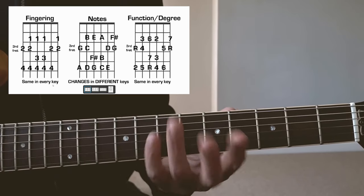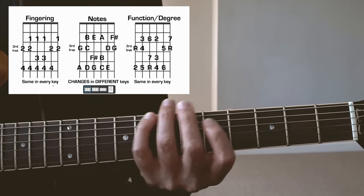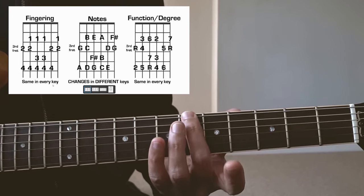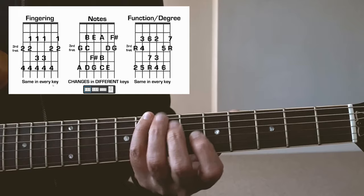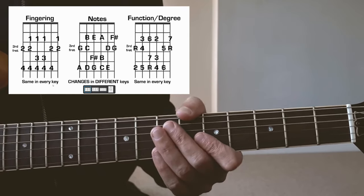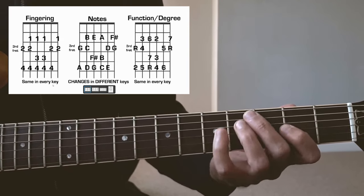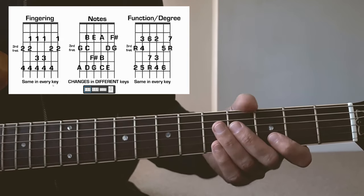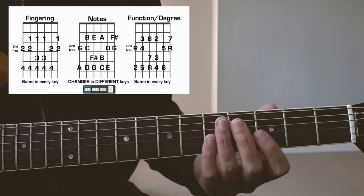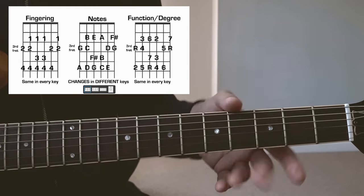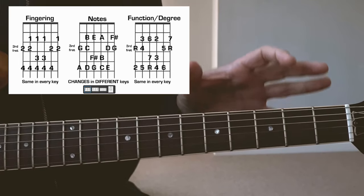It's still the same, but the notes change: B flat C D and so on. The function, the degree stays the same. The root is still the root, the second or the ninth are still the second and the ninth. So when you start to approach things this way, you have more of an understanding of things that are happening on the fretboard, not just where to put your fingers but literally what you are doing, you know, what those notes mean.